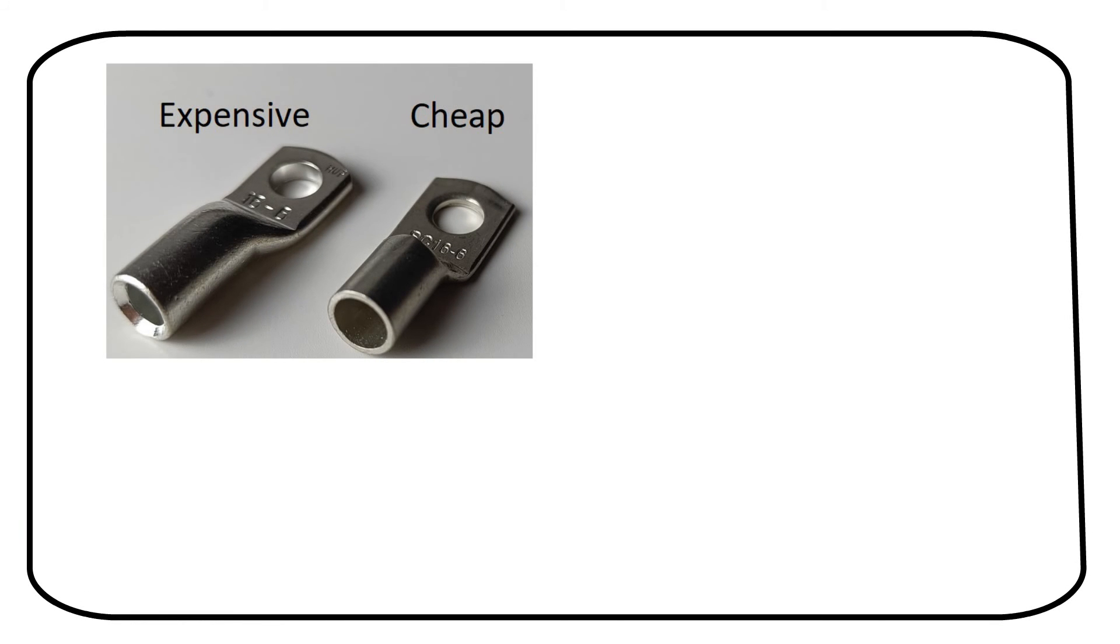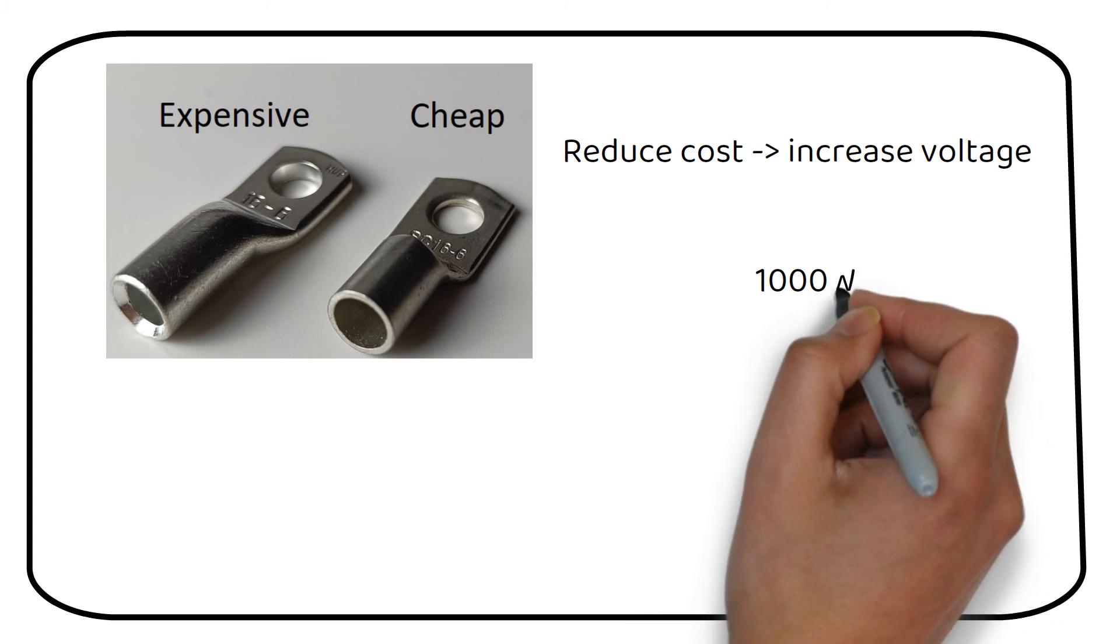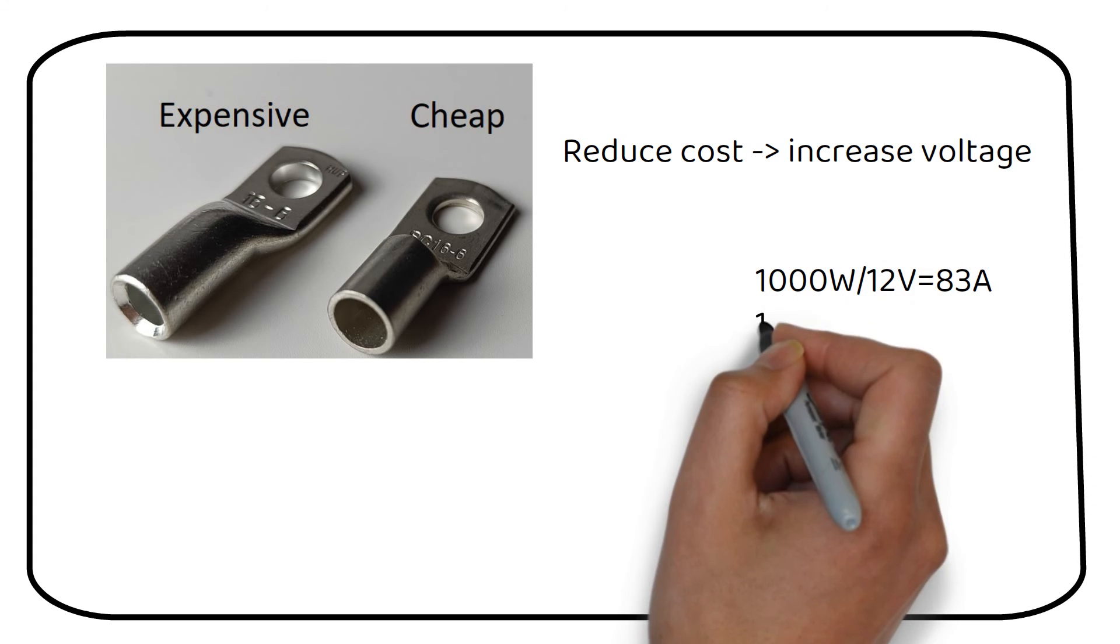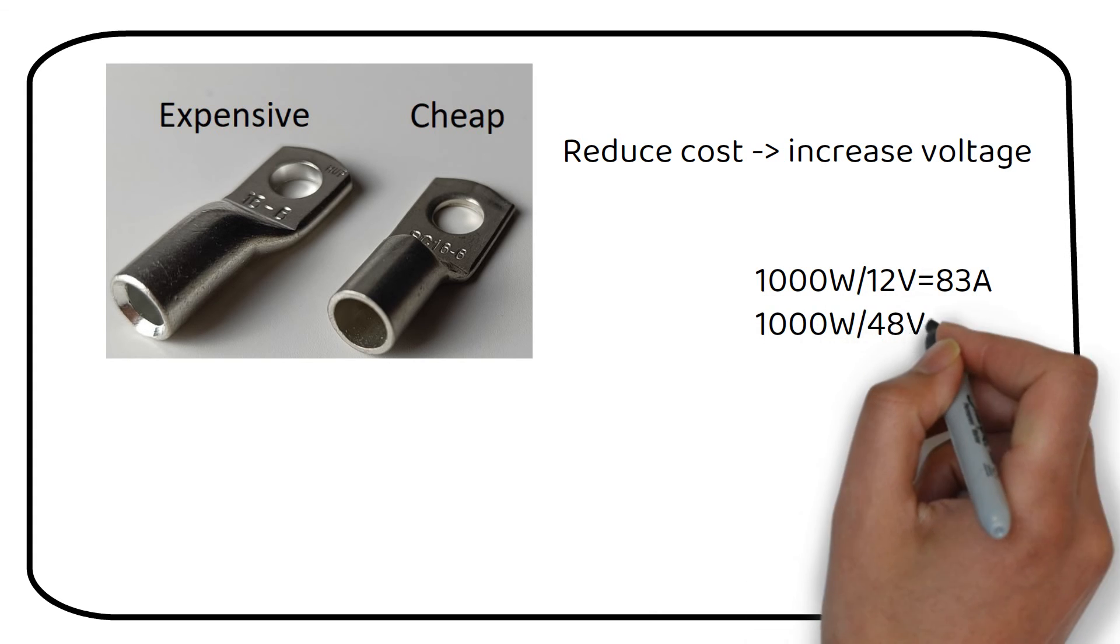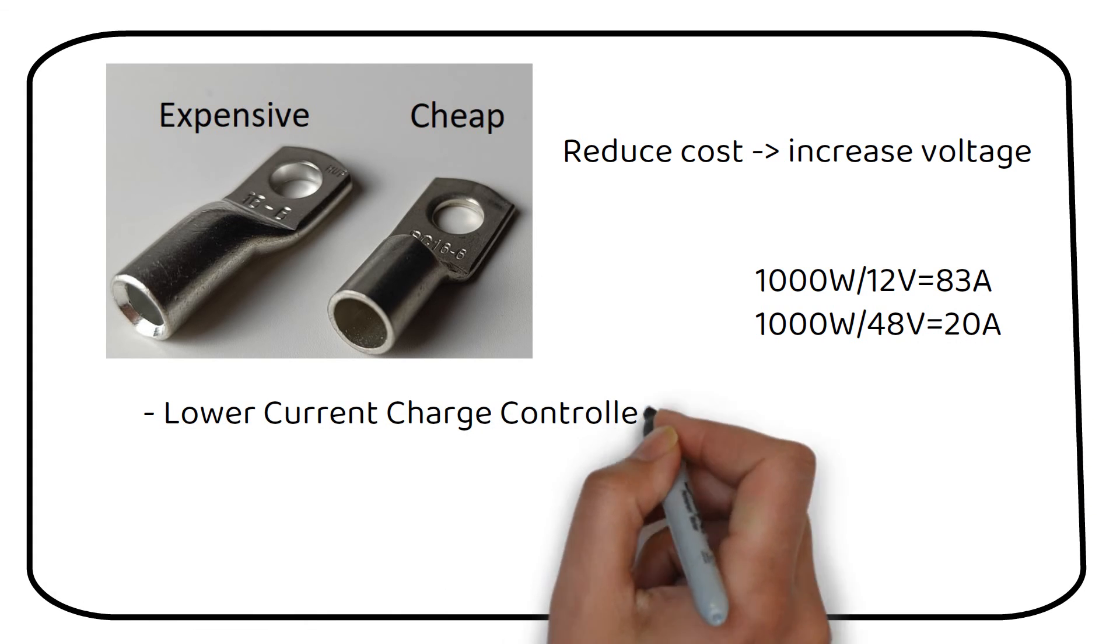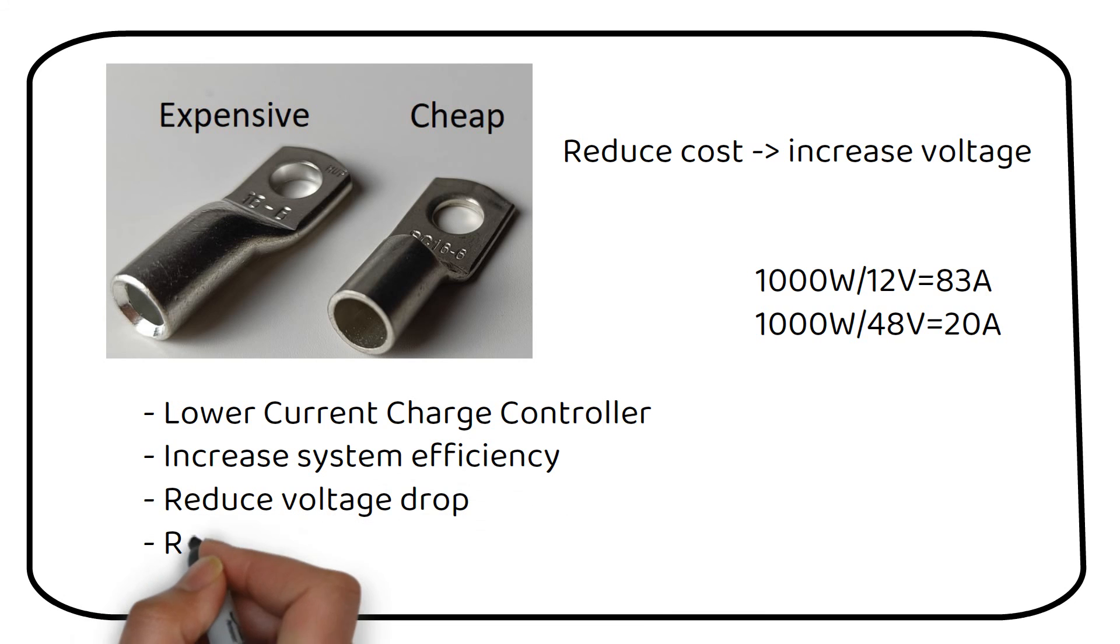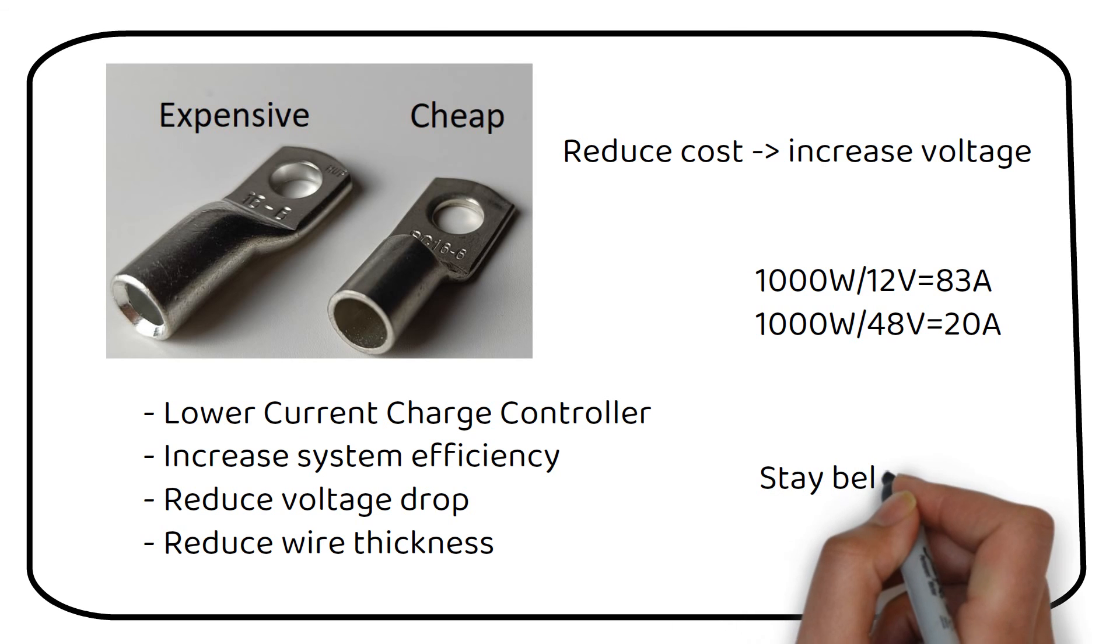The current will increase otherwise, it's too thin and the connection will get loose and heat up. Reducing cost in your system should be done by increasing the voltage. As you can see from the power formula, if we increase the voltage, the current will decrease. If we decrease the current in the system, we can get a cheaper charge controller, improve system efficiency, reduce voltage drop and use less thick wires. This is the easiest method of reducing system costs. I recommend staying below 100 amp in your system.